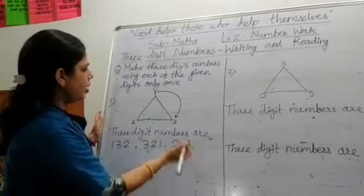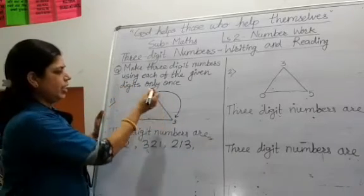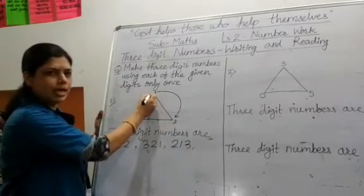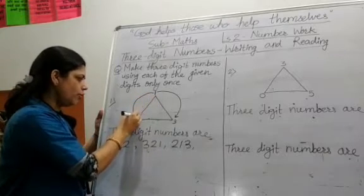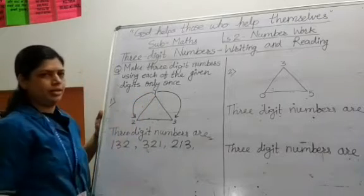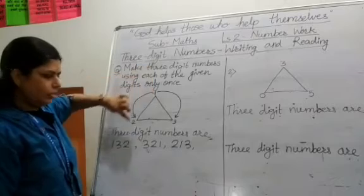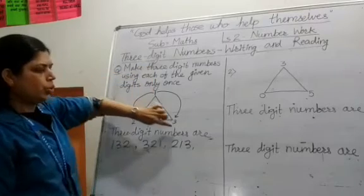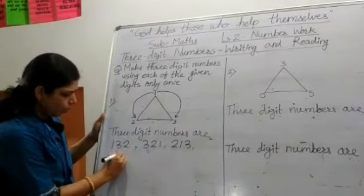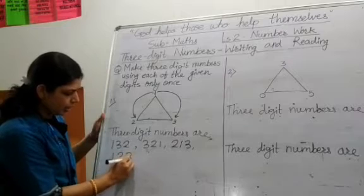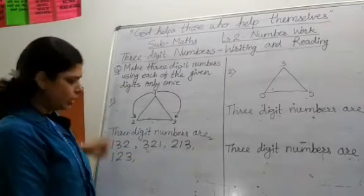Now start moving in an anticlockwise direction. Again start from 1. So we get the first number: 1, 2, 3. Means 123.